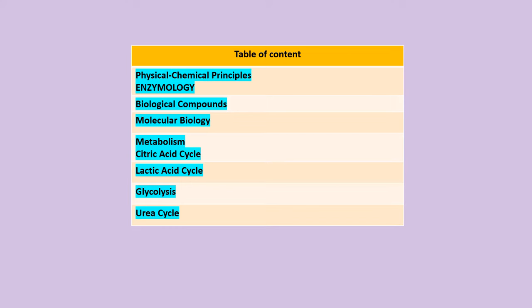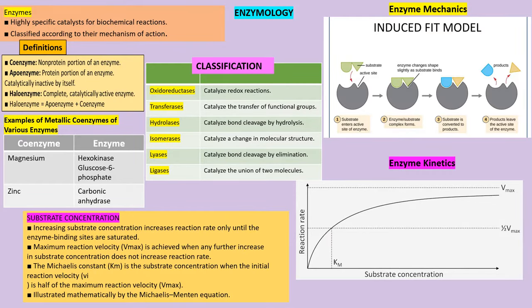We can discuss some more points about enzymes. Some examples of metallic coenzymes: magnesium is important for hexokinase and glucose-6-phosphatase, zinc is for carbonic anhydrase, iron for catalase, copper for cytochrome oxidase. You can also see the classification of enzymes.